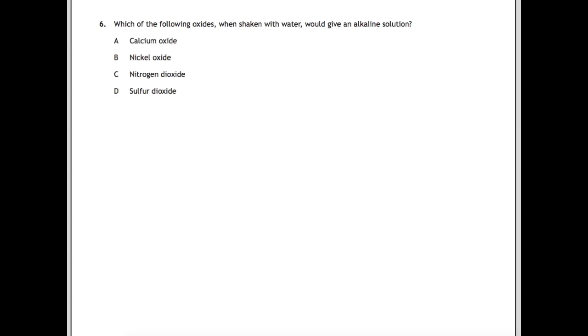For question 6 you're going to need your data book and you're going to need to have a look at page 8 which has the solubility grid at the bottom. Here we have which of the following oxides when shaken with water would give an alkaline solution. The first things that we need to think about are for alkaline solutions: number one, it needs to be soluble. And number two, it needs to come from a metal oxide.